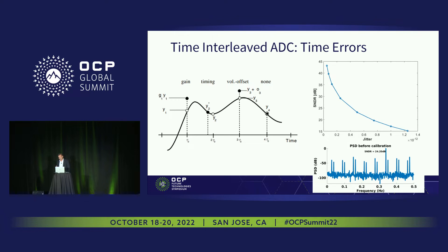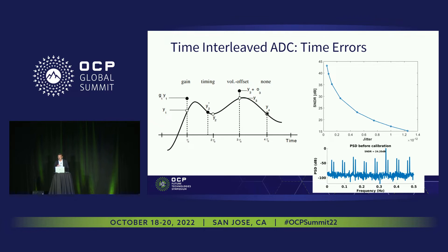The performance degradation due to timing mismatch is similar to that due to jitter. This curve shows the jitter impact on SNDR: one picosecond will lead, for a 56 GHz bandwidth broadband signal, to less than 20 dB SNDR — conditions under which the system will not operate without error. For a single tone with 16 parallel streams, there will be 16 image spurs due to timing mismatch error.